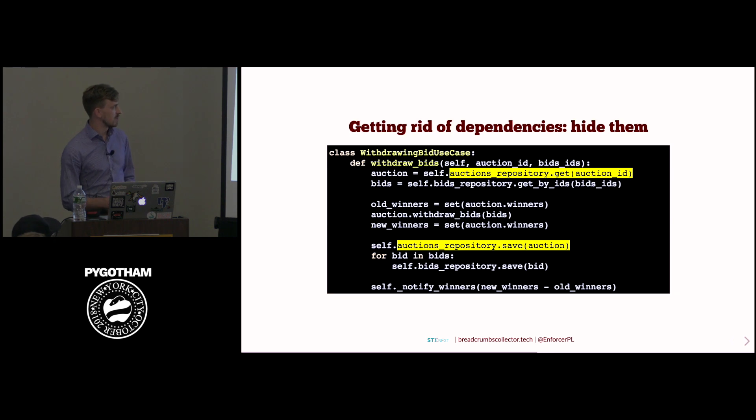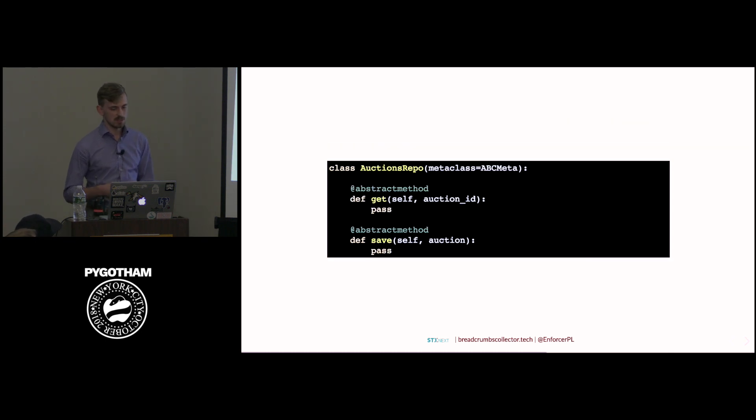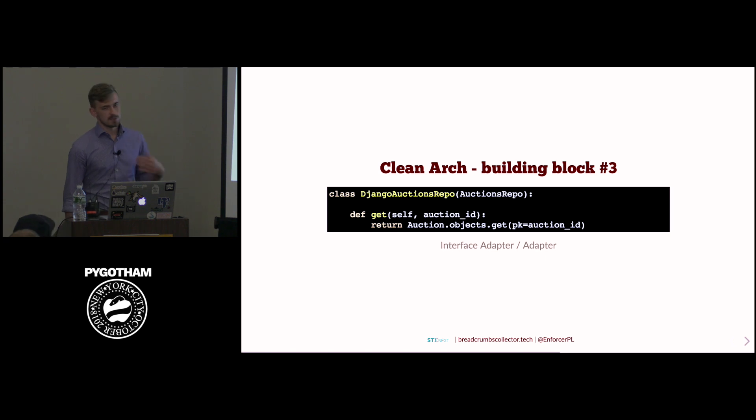So from the point of view of use case or any other business scenario, we are thinking in terms of abstraction looking like this. And that's actually the second building block of the clean architecture. This is called interface or port. Port is more concise. Of course, every abstract class actually has to have somewhere the concrete implementation because we want this code to get somewhere. So this is called interface adapter or simply adapter, and this is the third building block of the clean architecture.